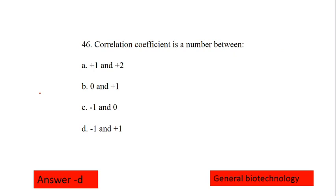Next question is correlation coefficient is a number between. Correlation coefficient is a number between minus 1 to plus 1. Correct option is option number D.